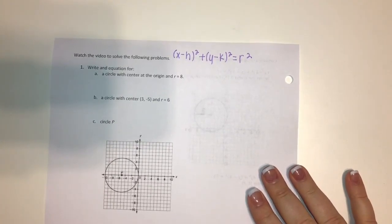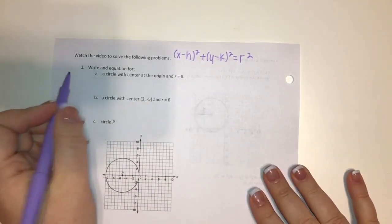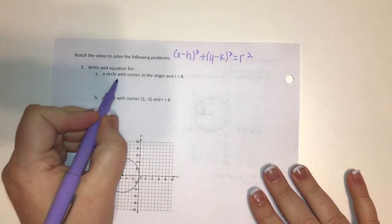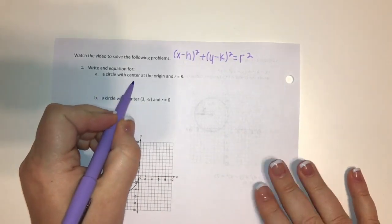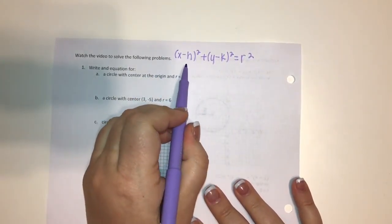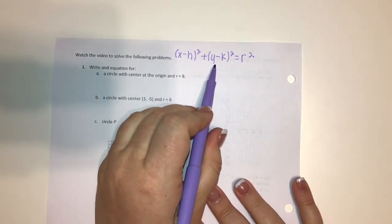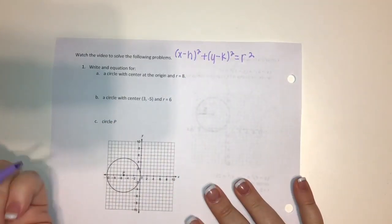All we're doing is plugging the center of our circle and our radius into this equation. Number one: write an equation for a circle with center at the origin and radius of 8. If our center is at the origin, then h and k are both zero, so we can just get rid of them because anything minus zero is just itself.